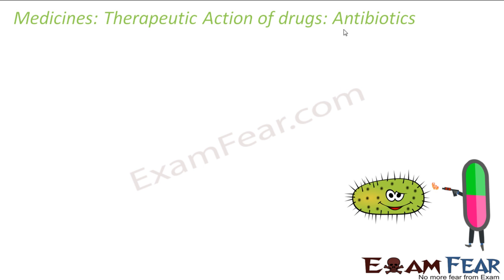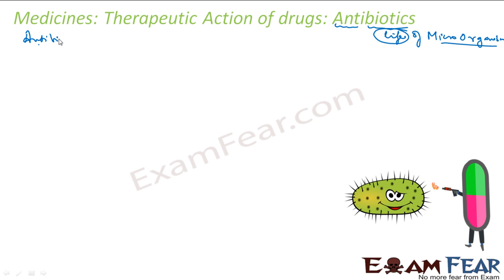Let's understand antibiotics first. The name comes from: 'anti' meaning opposite, and 'biotics' meaning life — so it is against the life of the microorganism, not the people, but the microorganism which is making you sick. That's why the name came — antibiotics inhibit the growth of microorganisms. Earlier, antibiotics were prepared from microorganisms themselves, like bacteria or fungi.